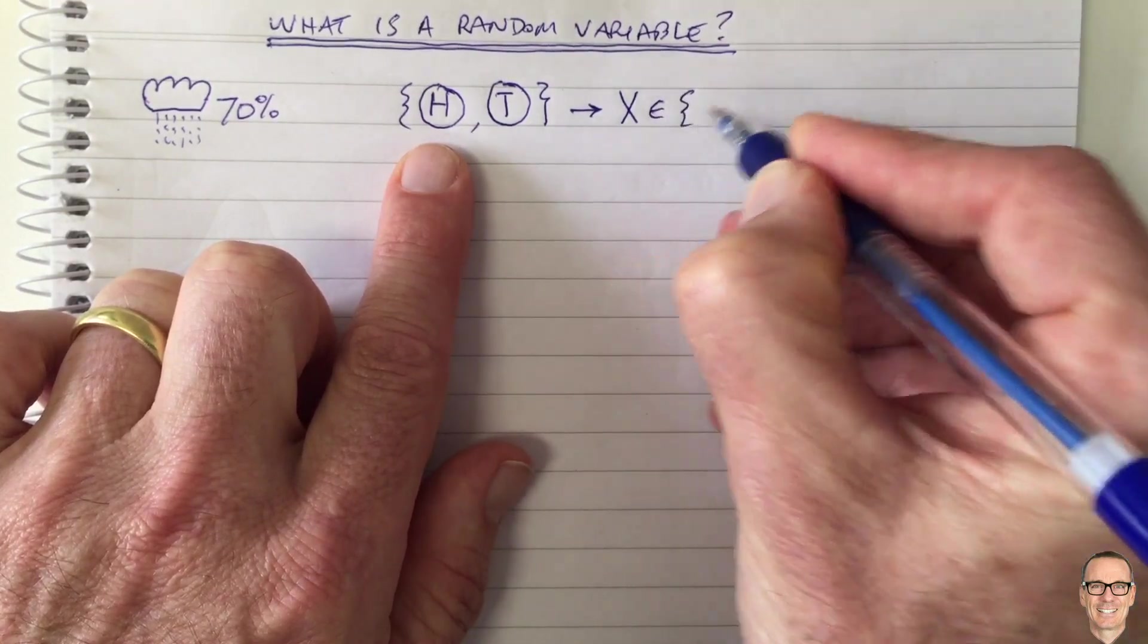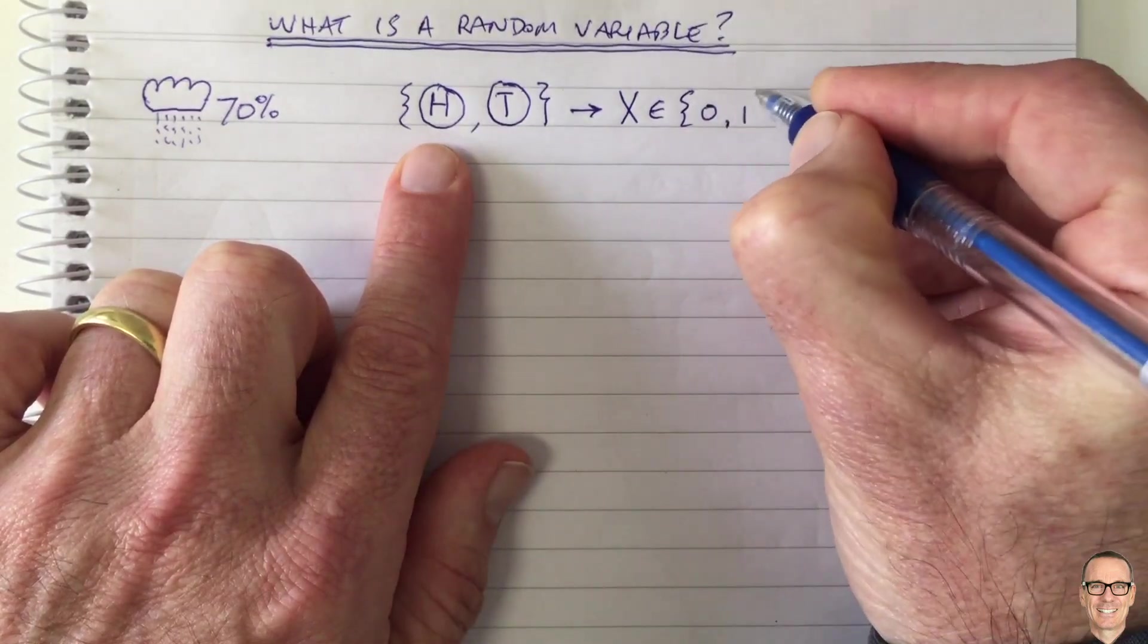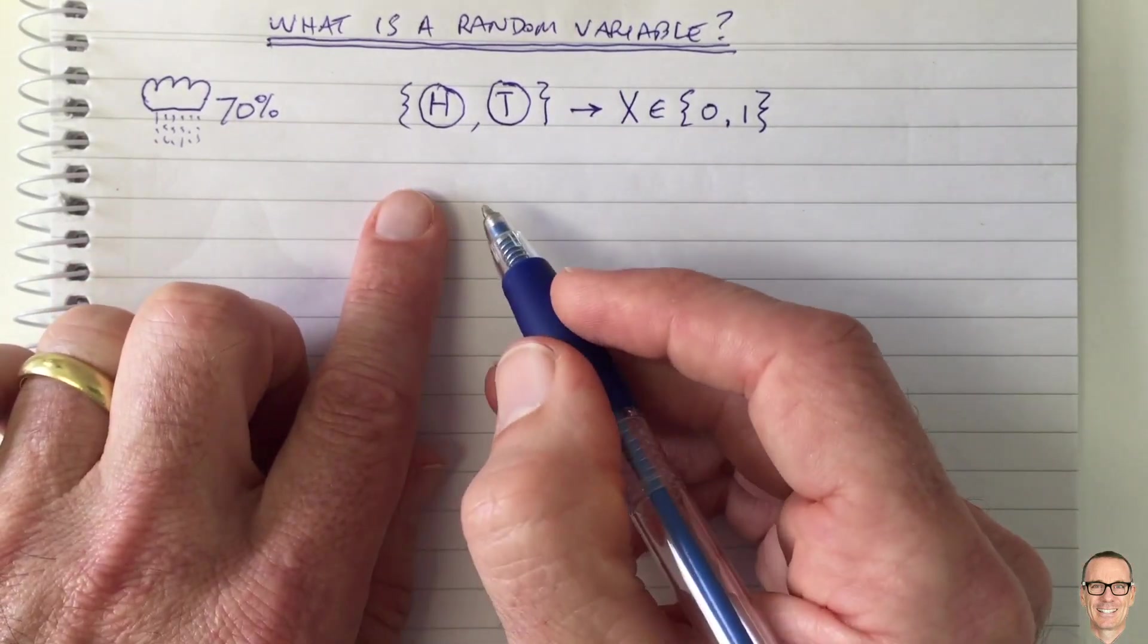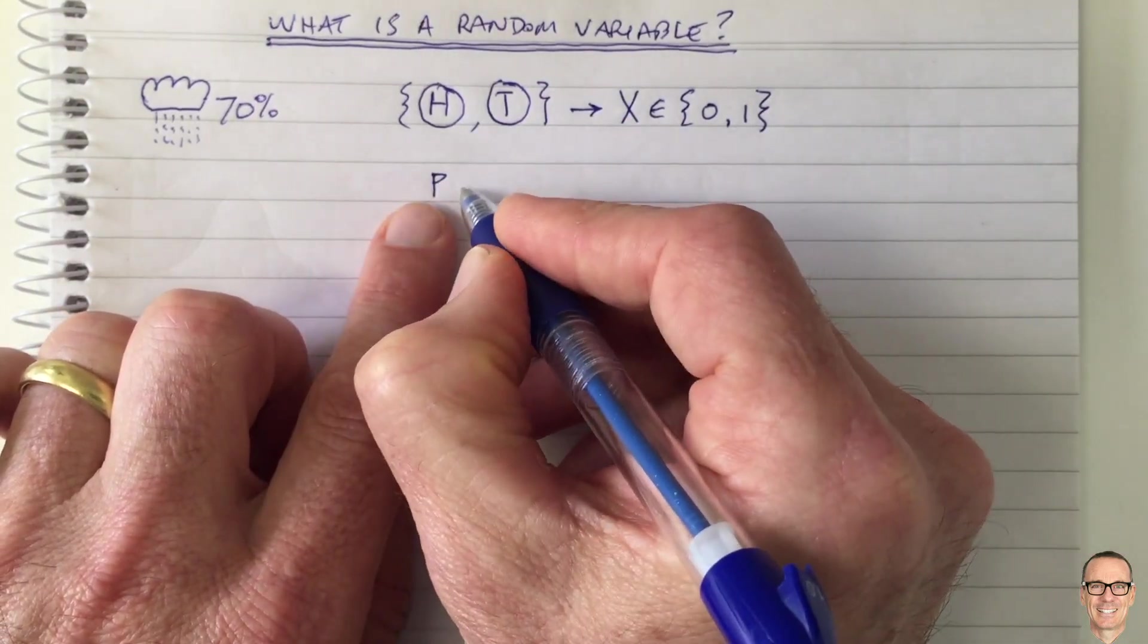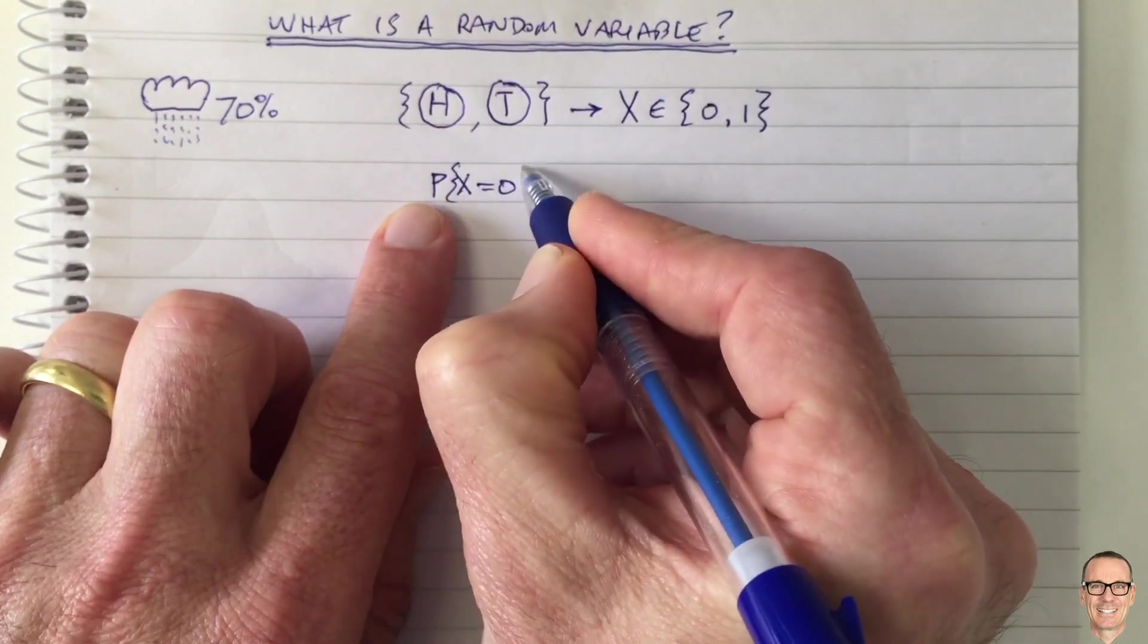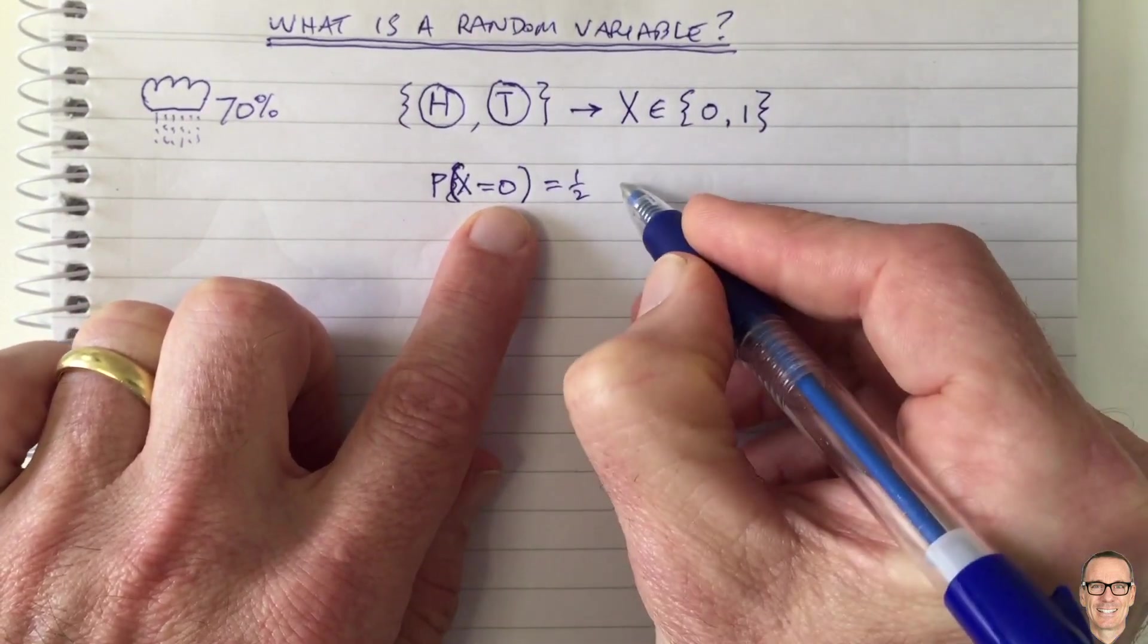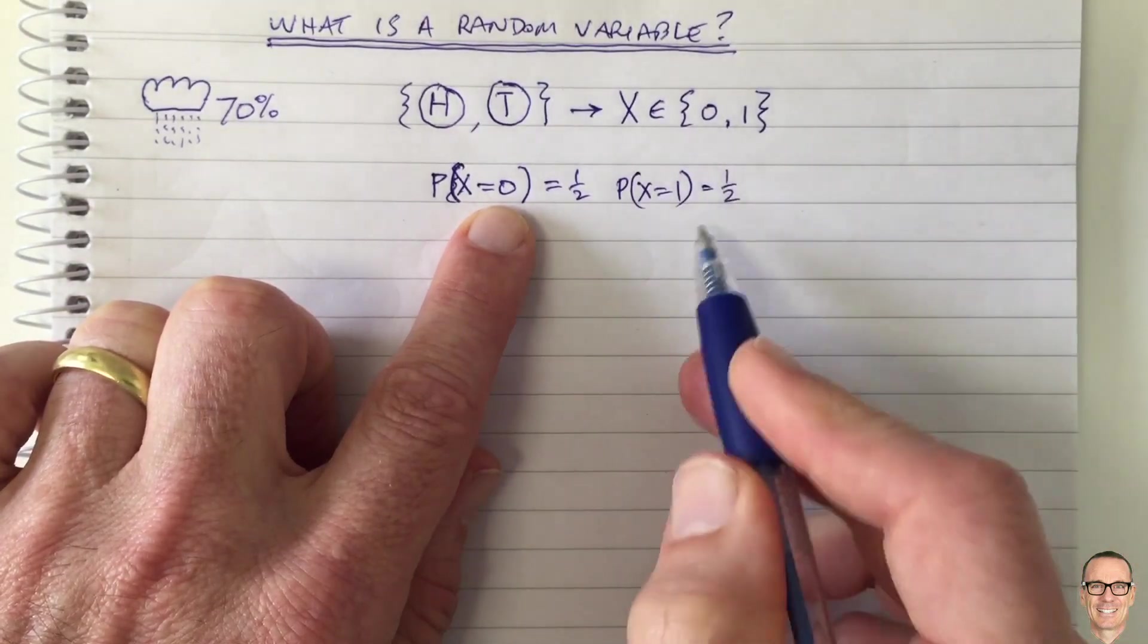So in this case, let's say for example we map the head to a zero and the tail to a one, and X is our random variable. There is an associated probability. The probability that X equals zero equals one half, and the probability that X equals one equals a half as well.